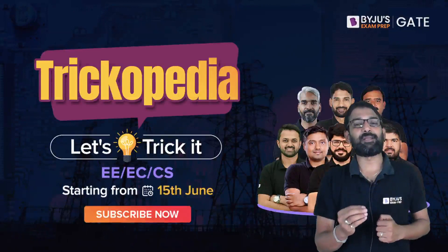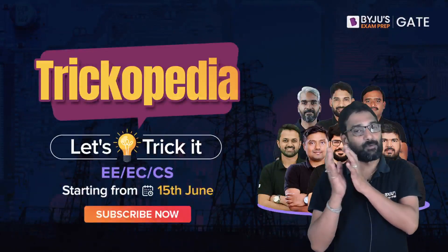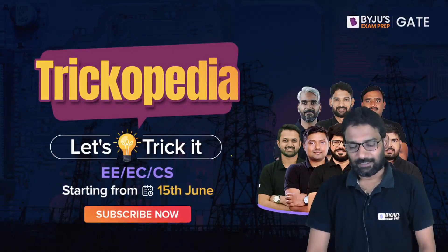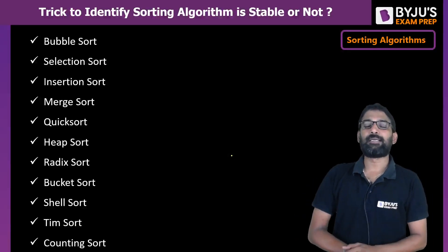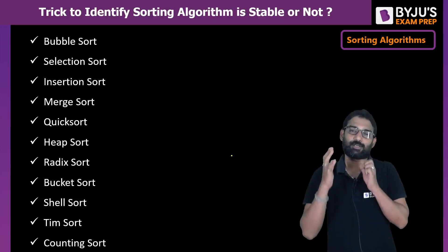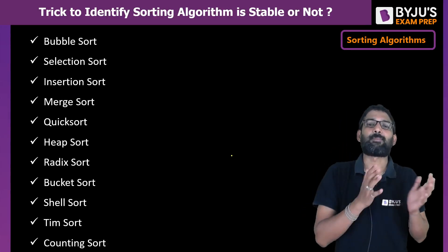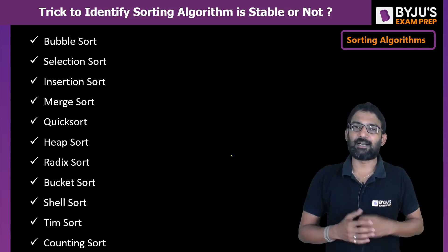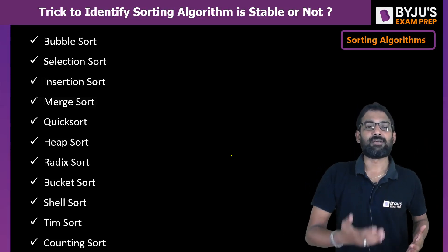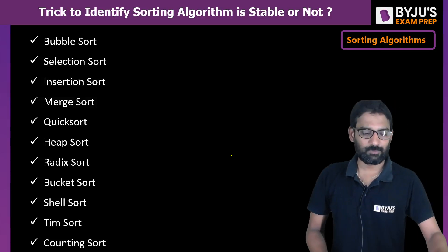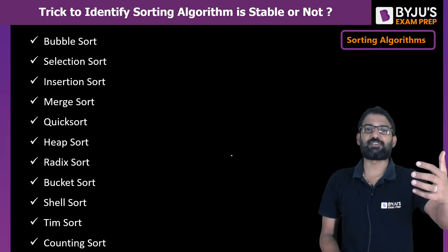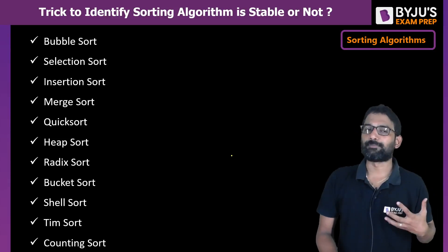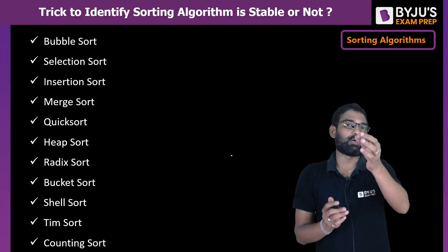Today's trick is a very interesting and useful trick for our GATE exam. What is that trick? How you can find the sorting algorithm is stable or not. Sorting means the process of arranging the elements in order, and we know there are several ways to arrange — they are called sorting algorithms. As you can see in this list: bubble sort, selection sort, insertion sort, merge sort, quick sort, and so on.